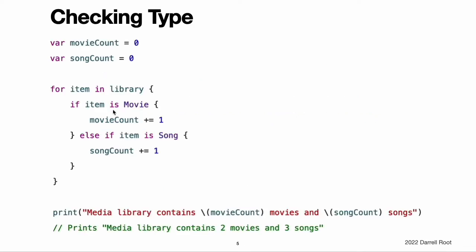Checking Type. Use the type check operator IS to check whether an instance is of a certain subclass type. The type check operator returns true if the instance is of that subclass type and false if it is not. This example defines two variables, movieCount and songCount, which count the number of Movie and Song instances in the library array. The example iterates through all items in the library array; on each pass, the for-in loop sets the item constant to be the next MediaItem in the array. Item IS Movie returns true if the current media item is a Movie instance and false if it is not. Similarly, item IS Song checks whether an item is a Song instance. At the end of the for-in loop, the values of movieCount and songCount contain a count of how many media item instances were found of each type.